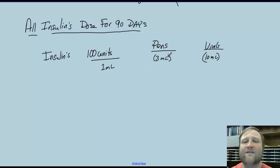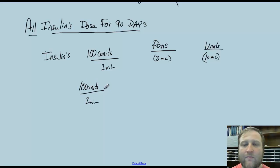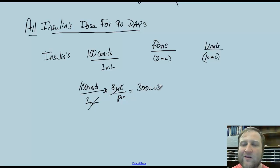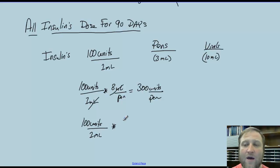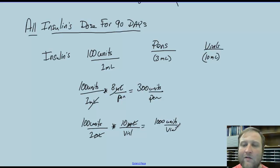Let's think about this: if pens have 3 mLs and we have 100 units per 1 mL, then 3 mLs per pen means we have 300 total units of insulin per pen. So 1 pen will have 300 units of insulin.